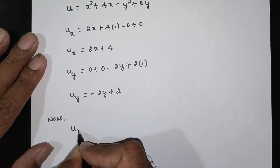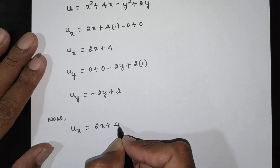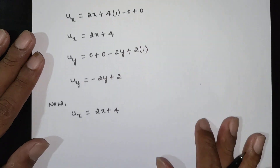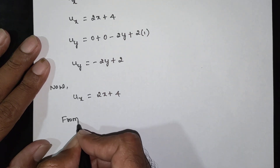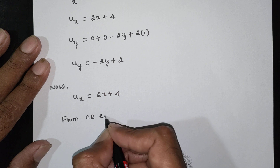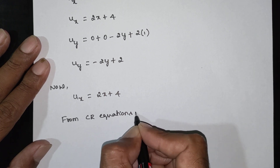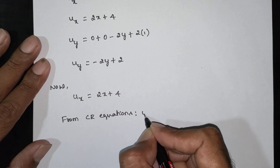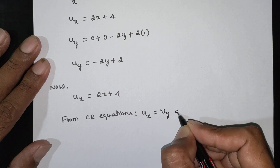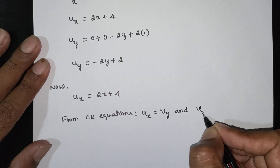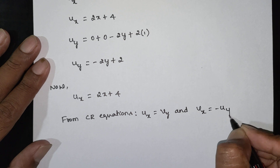Now consider ux. From the Cauchy-Riemann equations, we have ux equals vy, and uy equals negative vx.